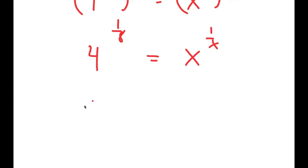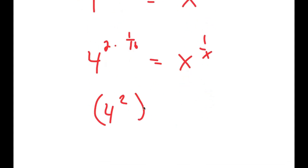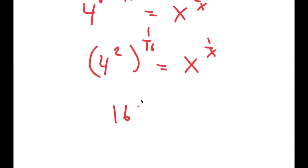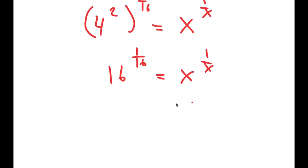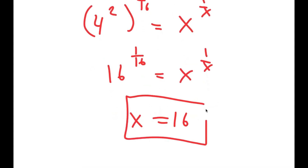This is the same thing as 4 to the power of 2 times 1 over 16. I can rewrite this as 4 squared to the power of 1 over 16, which equals x to the power of 1 over x. And 4 squared is 16, so I get 16 to the power of 1 over 16 is equal to x to the power of 1 over x, meaning x is equal to 16.